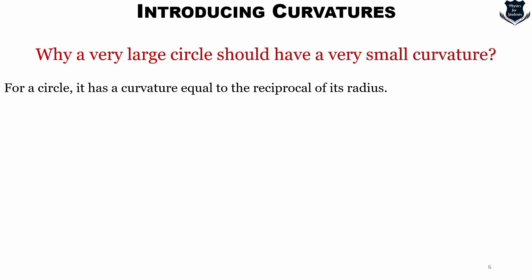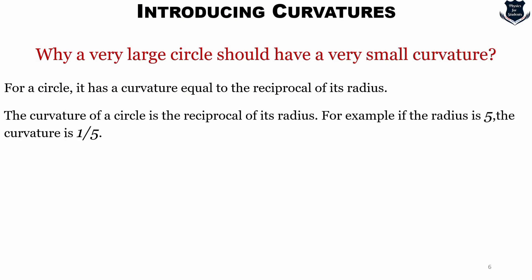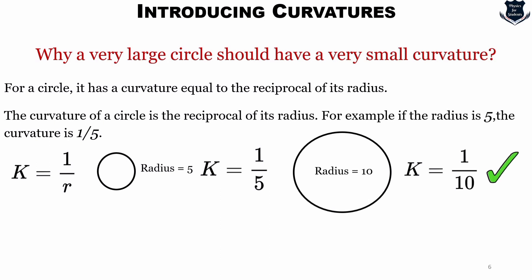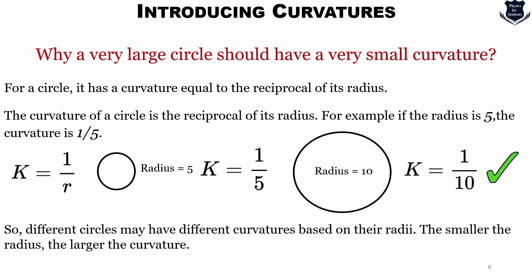Now we know that for a circle it has a curvature which is equal to the reciprocal of its radius. So the curvature of a circle is a reciprocal of radius. For example, if the radius is 5, the curvature is 1 upon 5. So we generally measure curvature as k equals 1 upon r. So if I take a circle which has got a radius of 5, the curvature gives 1 upon 5, whereas a bigger radius of 10 gives k equals 1 upon 10. So different circles may have different curvature based on their radii. The smaller the radius, the larger the curvature.